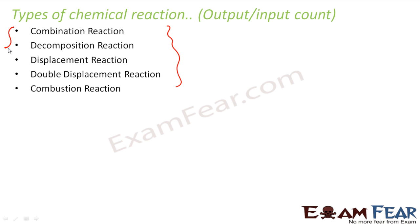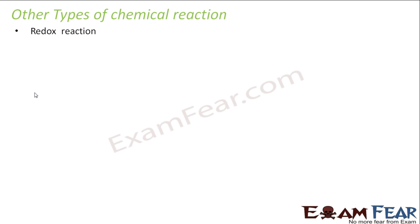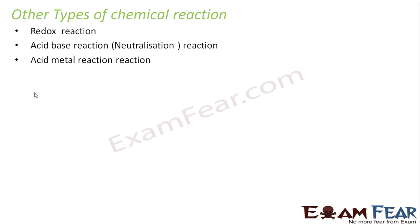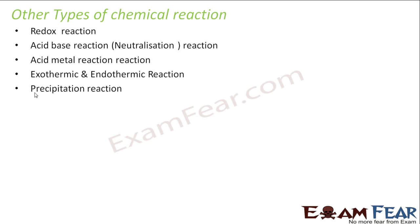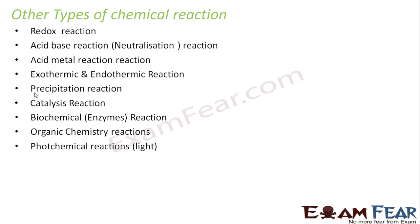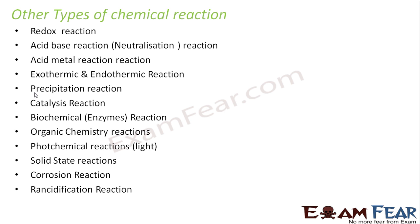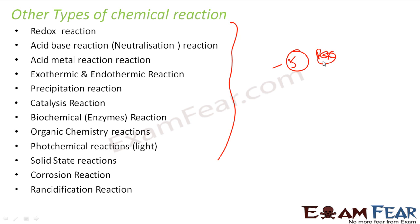For example, typically looking at any chemical equation you can identify which type it is. But there are other types of chemical reactions based on properties — redox reaction, where oxidation is going on; acid-base reaction; acid and metal reaction; exothermic and endothermic, that is whether the reaction gives out heat or requires heat; precipitation reaction, whether you get a precipitate; catalysis reaction, where a catalyst is required; and also biochemical reactions, organic chemistry reactions, photochemical reactions, solid state reactions, and others.